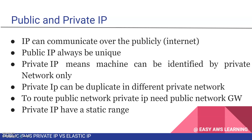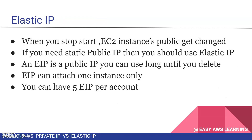Now, the difference leads us to Elastic IP, which is Amazon's term. When you launch an EC2 instance in Amazon, a public IP is attached. However, when you stop or restart the instance, that public IP changes and you get a new IP each time.